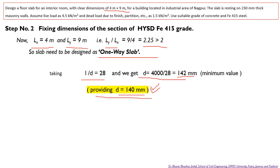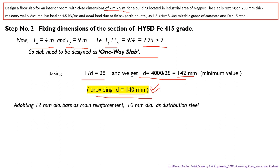We are adopting 12 mm diameter bars as main reinforcement and 10 mm diameter bars as distribution steel. Based on these assumptions, we can calculate the overall depth of the section, which is effective depth plus effective cover. The effective cover is clear cover plus half the bar diameter, which is 30 mm plus 6 mm equals 36 mm. However, we adopted an effective cover of 50 mm, giving an overall depth calculation result of 176 mm.